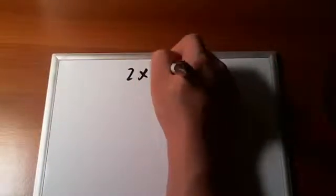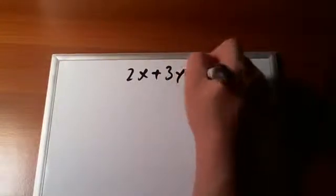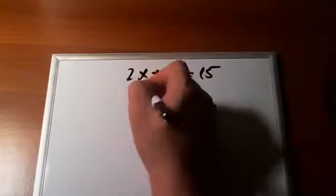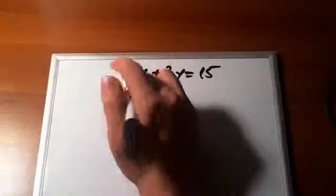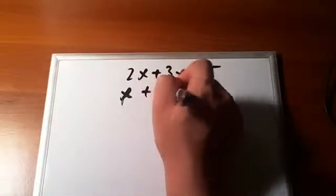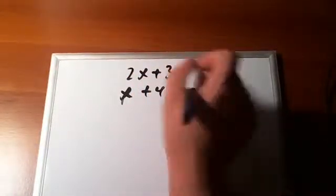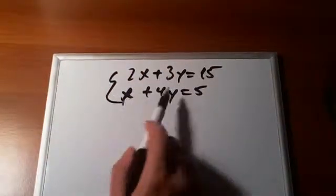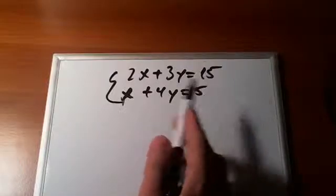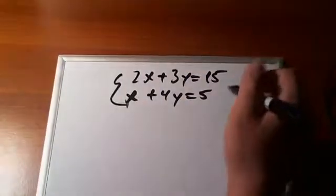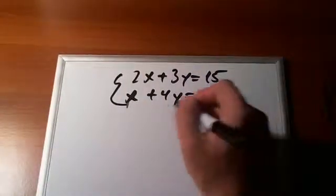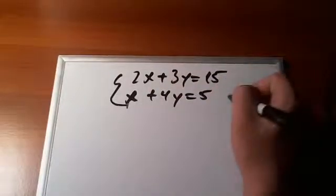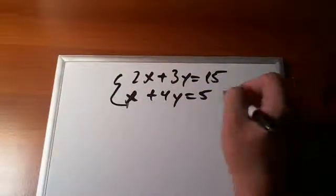Our third example. In the previous video, we had 2x plus 3y is equal to 15. And x plus 4y is equal to 5. Again, if we just add them together or subtract them, we will not get rid of anything. But what we can do, we can multiply this equation, equation number 2 by minus 2.